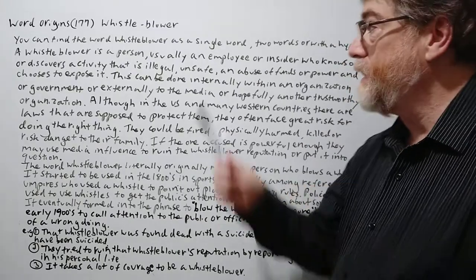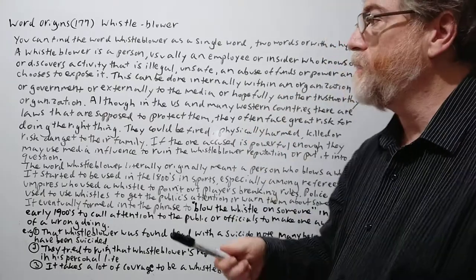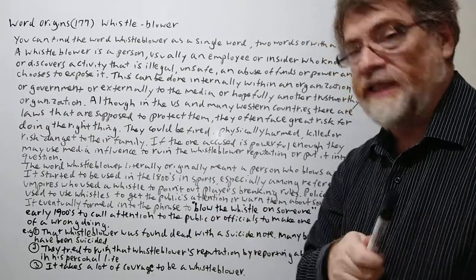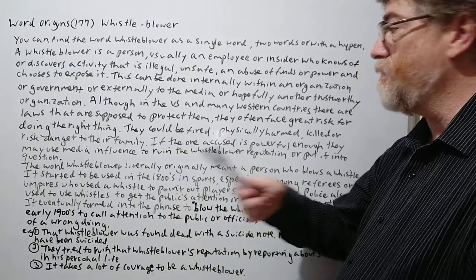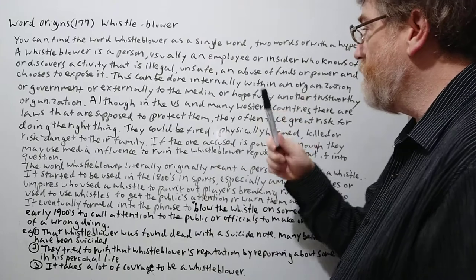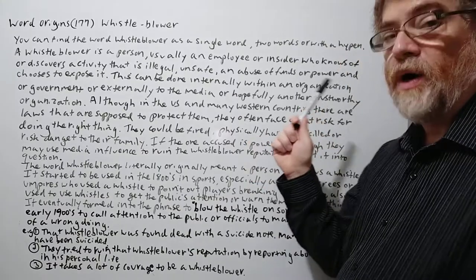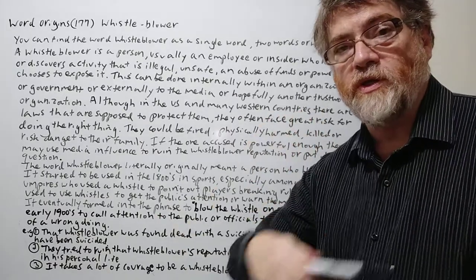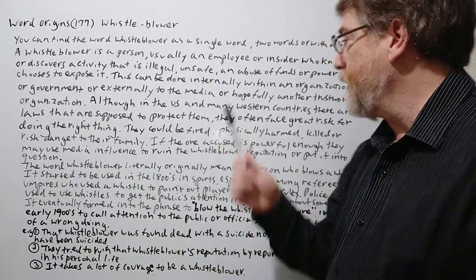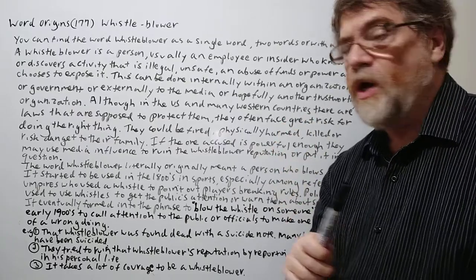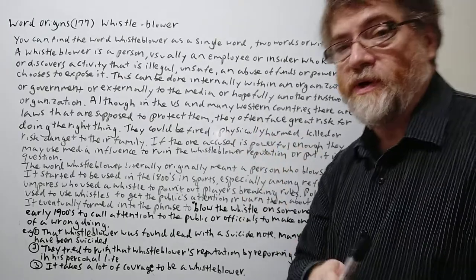A whistleblower is a person — usually an employee or an insider — who knows of or discovers activity that is illegal, especially illegal, unsafe, or something that may harm people who work there or harm the public. An abuse of funds — maybe they are misusing money, stealing money, or abusing power — and they choose to expose it. This can be done internally within an organization or government, or externally to the media or another trustworthy organization.